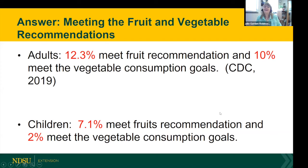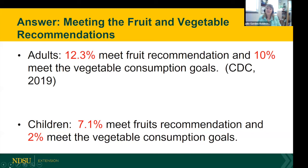Here's the answer to our poll: about 11 percent of adults meet the fruit and vegetable recommendation — meaning almost 90 percent of us do not meet that recommendation of roughly four to four and a half cups of fruits and vegetables total per day. Children aren't doing well either — about 5 percent of kids in the United States meet the fruit recommendation, and fruit and vegetable recommendations combined. So we're not doing well as adults or children, but there's a lot we can do to change that.